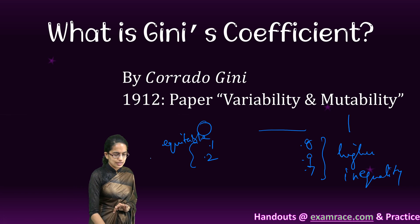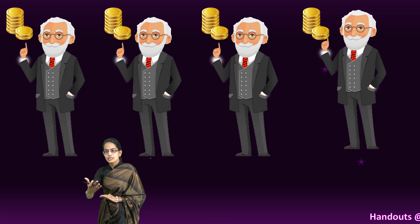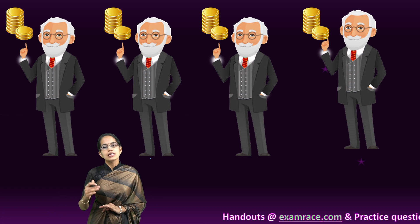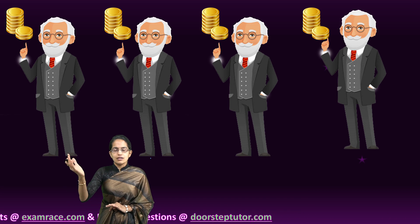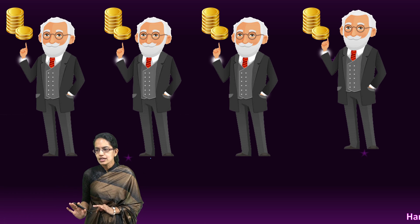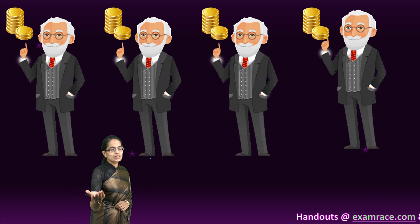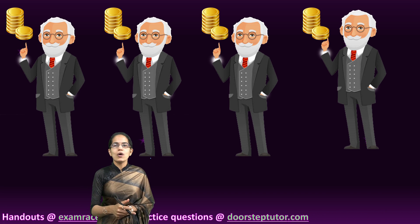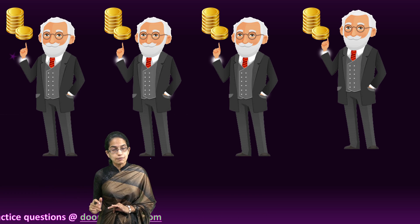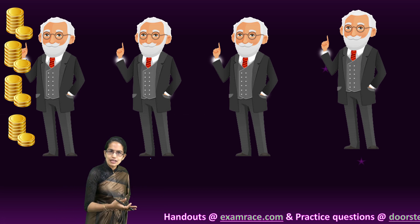Let's consider 4 people with equal amount of wealth, or every resident in an imaginary country where there are only 4 residents and each of them has the same amount of income. In this case the Gini coefficient would turn out to be 0 because all of them have the same amount of wealth. But if this whole wealth is concentrated with one person, that is an example of perfect inequality, and the Gini coefficient would turn out to be 1.